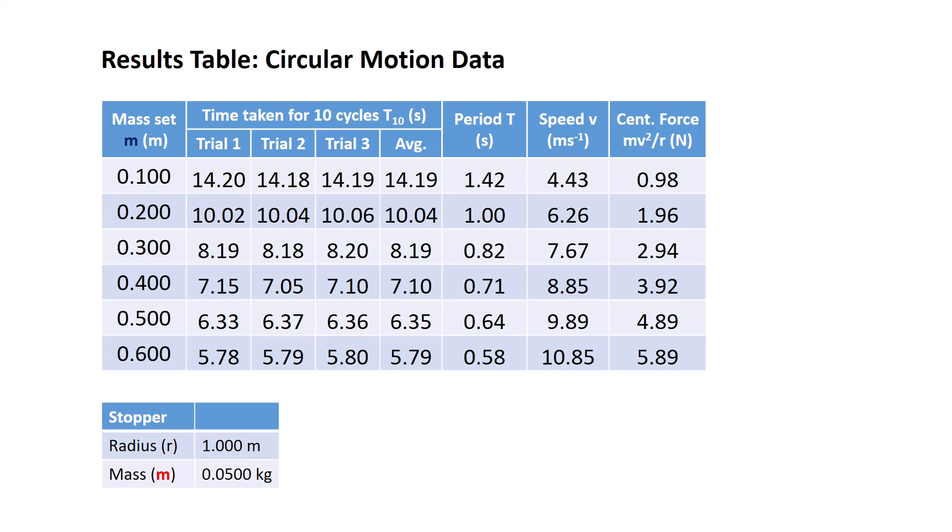There's our completed set of data. It has the mass sets, the time taken on average for 10 cycles, from that we've calculated the period, the velocity, and the centripetal force. Let's now analyze our data.